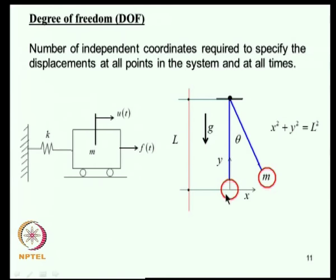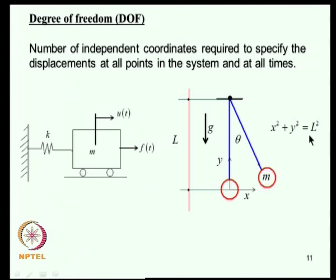Similarly, for a pendulum, we might use X and Y coordinates of the mass, but if the string length doesn't change, X and Y are constrained by X² + Y² = L², leaving only one independent coordinate. So a pendulum is also a single degree of freedom system.